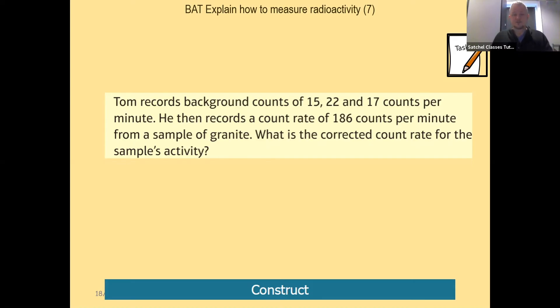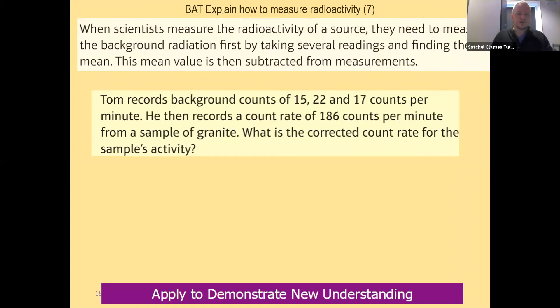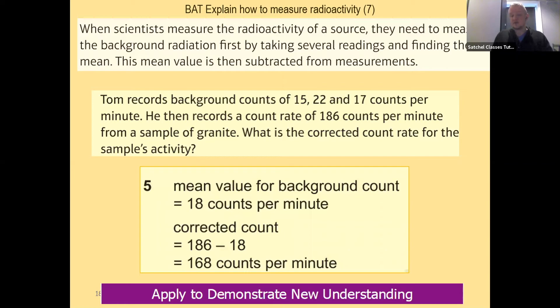So here we would find the mean count rate. When they measure the radioactivity of a source, scientists have to measure the background radiation first by taking several readings and finding the mean. The mean value is then subtracted from those measurements. So for Tom, we would have a mean value for background count which is 15 plus 22 plus 17 divided by 3 to give us 18 counts per minute.